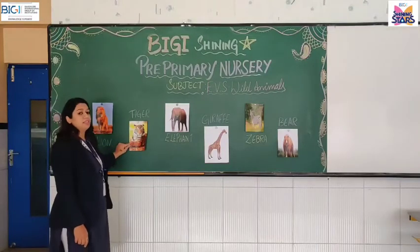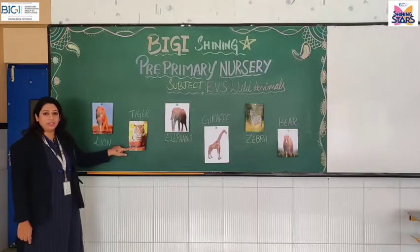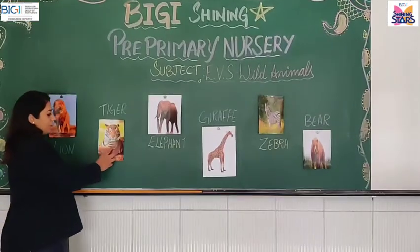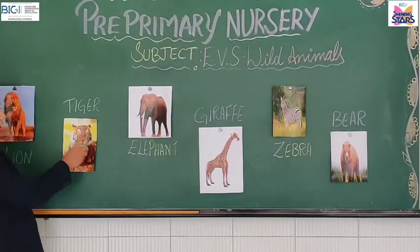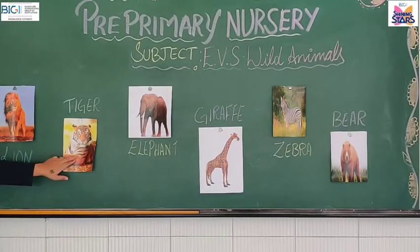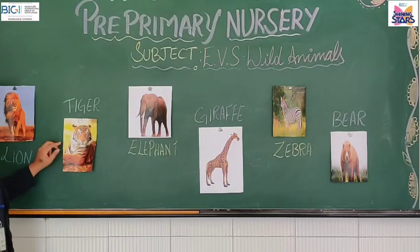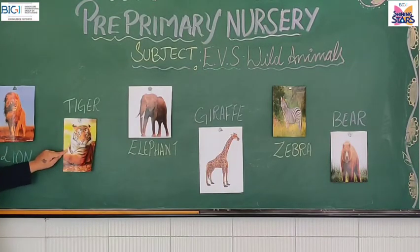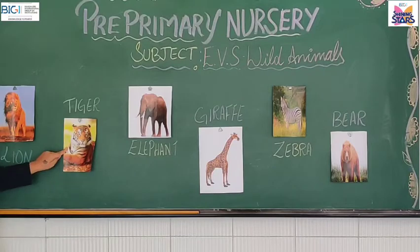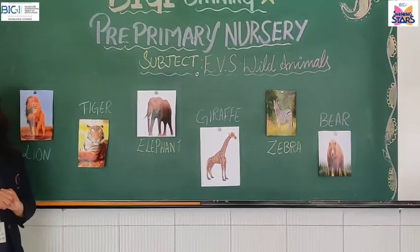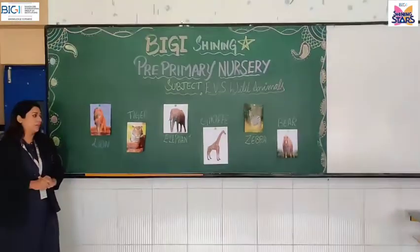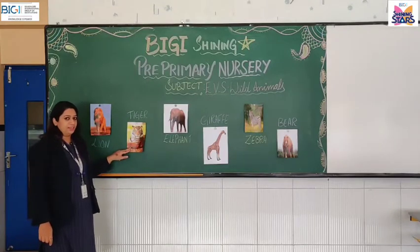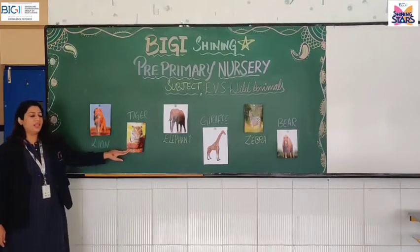Next, this is a tiger. Have you seen a tiger, children? Can you see the stripes all around its body? A tiger has stripes all around its body. The tiger is our national animal. This tiger also will hunt other animals in the forest for food. So, this is a tiger, a wild animal, and it is our national animal.